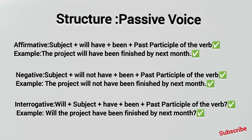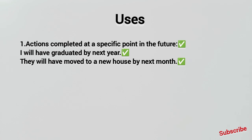Now let's talk about some uses. The first use is: an action completed at a specific point in the future. For example, something that will be completed by next year or next month — a specific point in the future. In such cases, we use the future perfect tense.